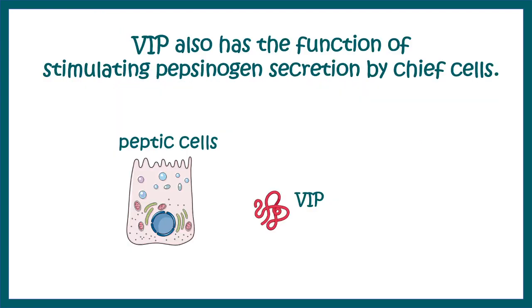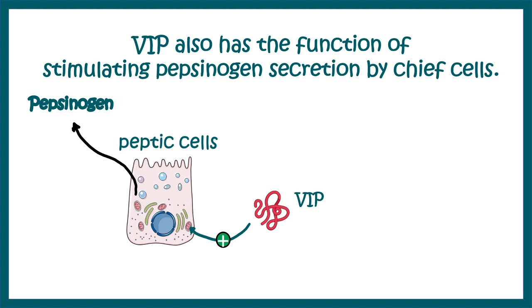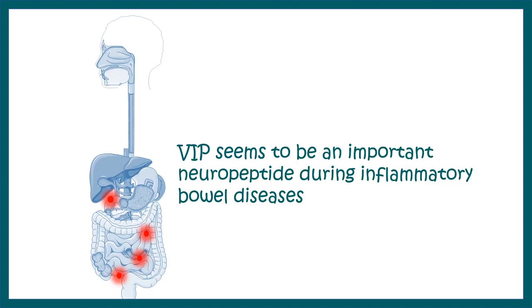VIP also functions to stimulate the peptic cells, or chief cells, so that they secrete pepsinogen. In this way, VIP indirectly aids in protein digestion.